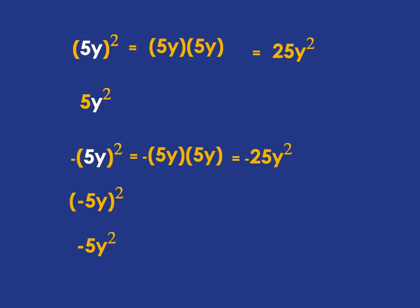What's different in the next one? In this case, it's the negative 5y that's being squared — the negative, the 5, and the y are all being squared. So what you've got is negative 5y multiplied by negative 5y. A negative times a negative gives us a positive, then 5 times 5 is 25, and y times y is y squared. So we've got 25y squared.